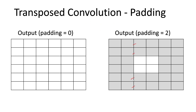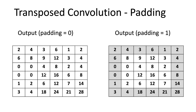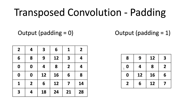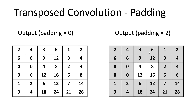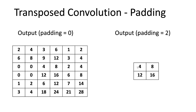For example, starting from our 6x6 output: with padding=1, the first and last rows and columns are not considered, leaving a 4x4 output. With padding=2, two rows from top and bottom and two columns from left and right are removed, leaving only the central 2x2 values. You can verify this using the formula with the appropriate padding value substituted in.